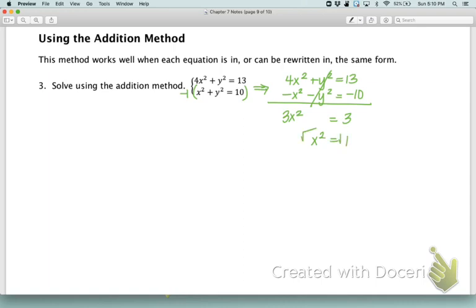We can divide by 3 on both sides and we get x squared equals 1. Now we're going to take the square root of both sides. Don't forget, whenever you introduce the radical, we get plus or minus 1 for our solution, not just 1.